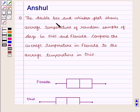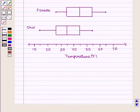The double box and whisker plot shows average temperature of random samples of days in Ohio and Florida. Compare the average temperature in Florida to the average temperature in Ohio, where the temperature is given in degree Fahrenheit.